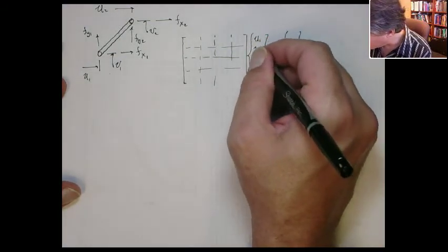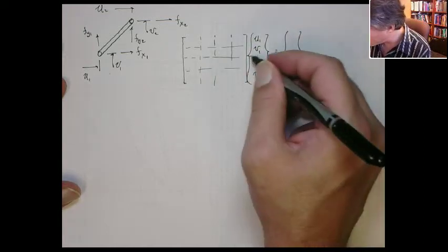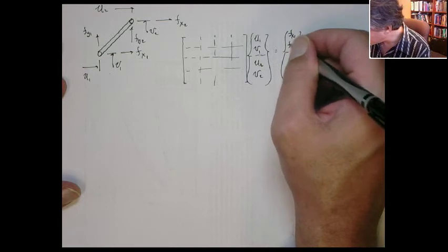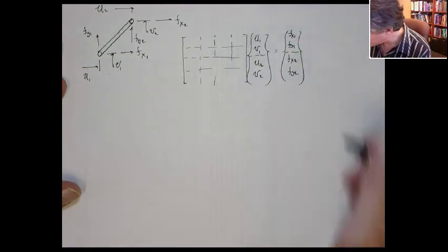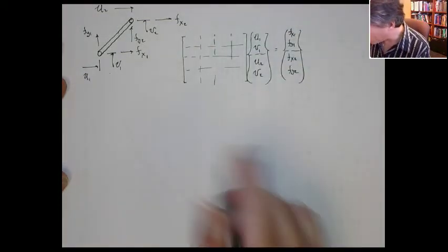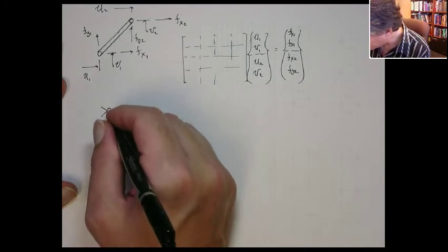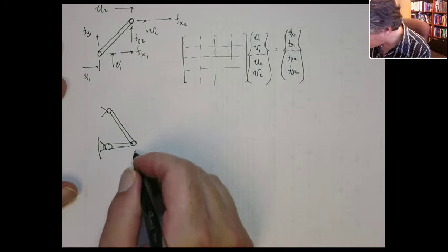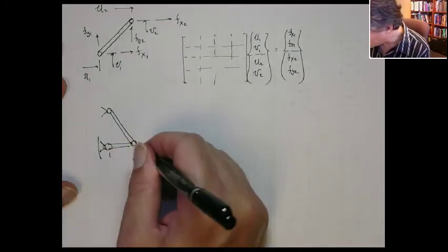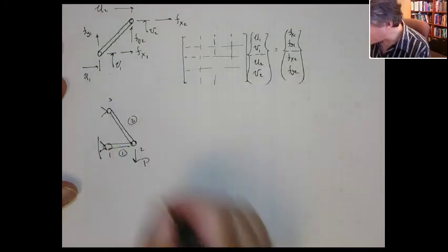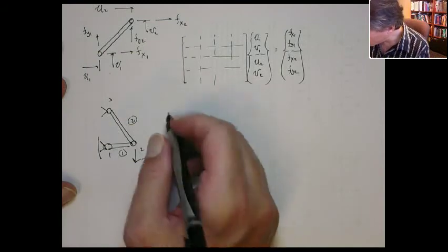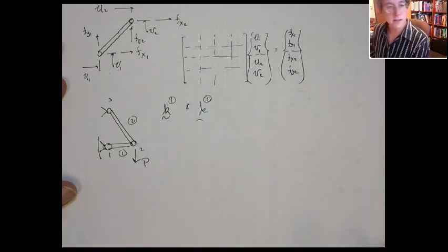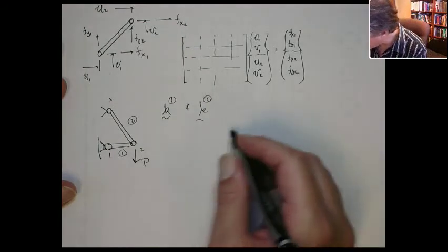The degrees of freedom are organized as U1, V1, U2, V2 — so here are the x and y degrees of freedom for the first node and x and y degrees of freedom for the second node. We do the same for the forces. You could construct the local stiffness matrices for each one of those elements — we'll talk about how to do that later — and they would scatter the same way but with degrees of freedom.